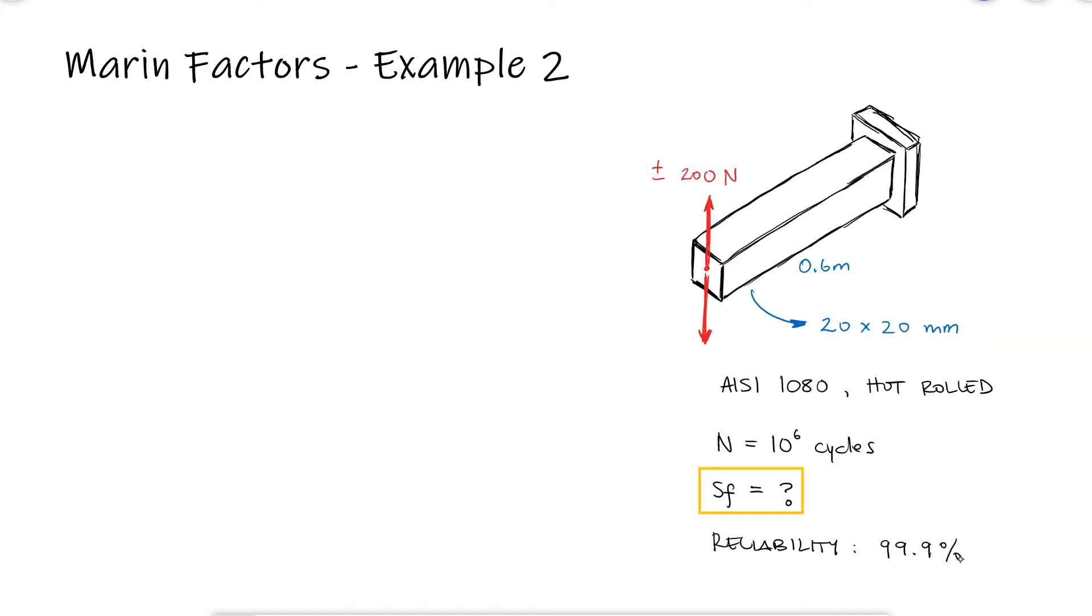We know that the fatigue strength for 10 to the 6 cycles is just the endurance limit. And we know that to calculate our endurance limit, we need to multiply a first rough estimate Se' times all the Marin Factors that apply.